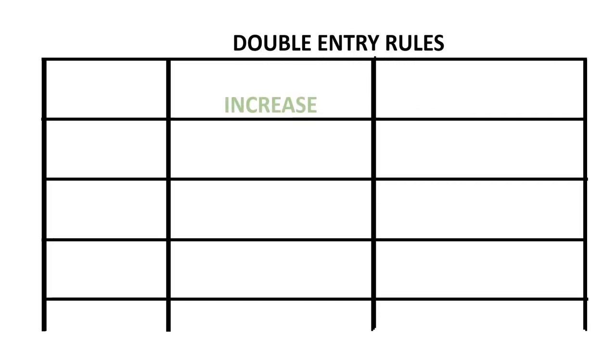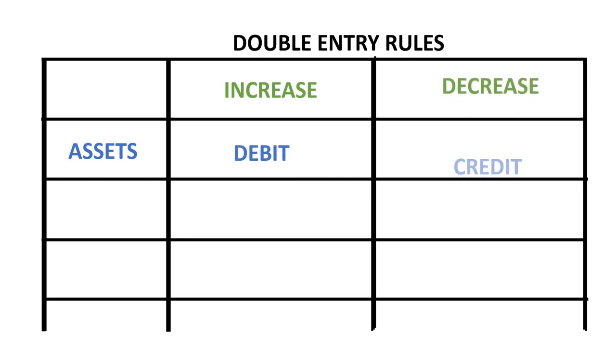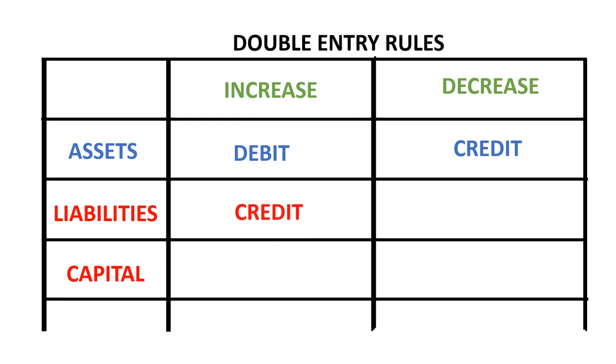To increase an asset we make a debit entry; to decrease an asset we make a credit entry. To increase a liability or capital we make a credit entry; to decrease a liability or capital account we make a debit entry. The double entry rules for liabilities and capital are the same and opposite to those for assets. Let's get into worked examples illustrating how we apply these double entry rules on transactions of assets, liabilities, and capital.